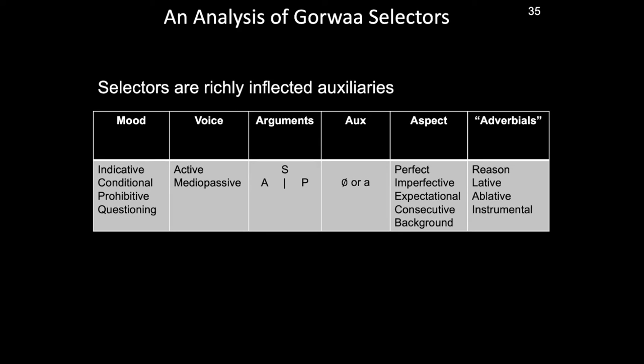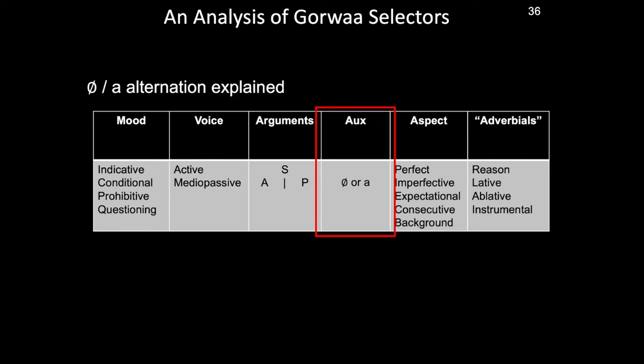This talk will submit that at the heart of selectors is an auxiliary verb. These auxiliary verbs are richly inflected, as can be seen in this schematic, which indicates everything which may be marked on the selector in roughly sequential order. The auxiliary itself, I submit, is a highly reduced phonological segment — 'a' — which, if accompanied by phonologically overt argument marking morphemes, is entirely phonologically reduced, that is, realized as phonologically zero.